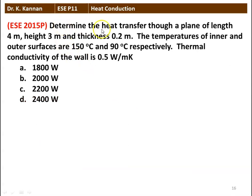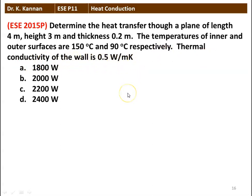Next question: determine the heat transfer through a plane wall of length 4 meter, height 3 meter, and thickness 0.2 meter. The temperature of the inner and outer surfaces are 150 degree Celsius and 90 degree Celsius respectively. Thermal conductivity of the wall is 0.5 watts per meter Kelvin. The options are: (A) 1800 watts, (B) 2000 watts, (C) 2200 watts, (D) 2400 watts.